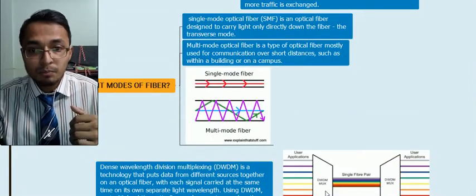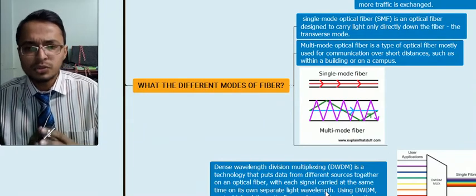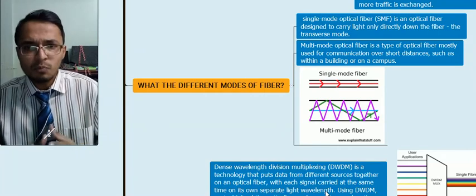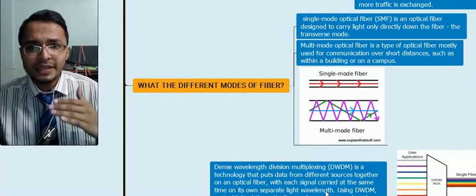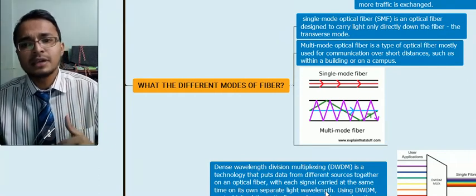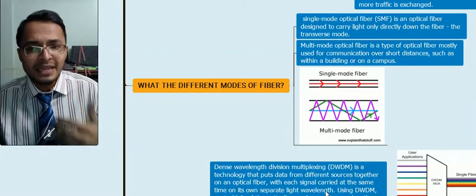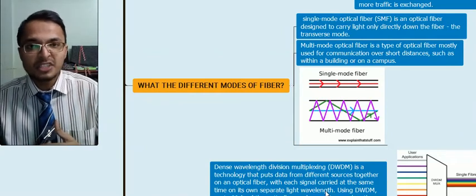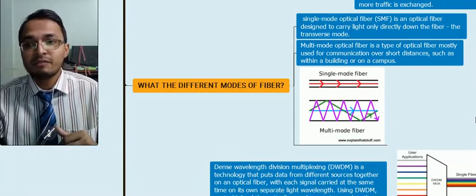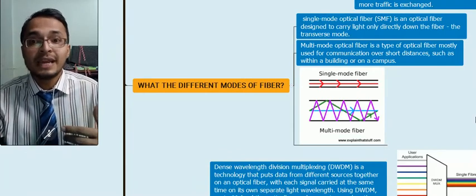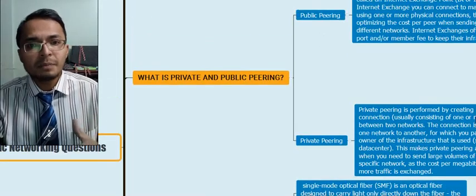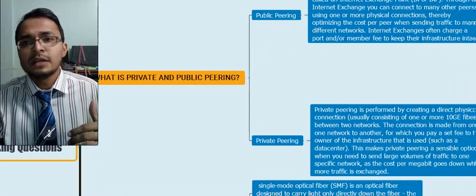Now talking about the modes of fiber. We will be talking about two modes: single mode fiber and multimode fiber. In single mode fiber, light can travel only in one direction. In multimode, light can travel in more than one direction. For short data transmission we use multimode, and for longer, more reliable transmission we use single mode fiber.